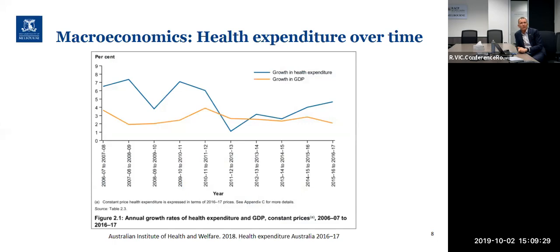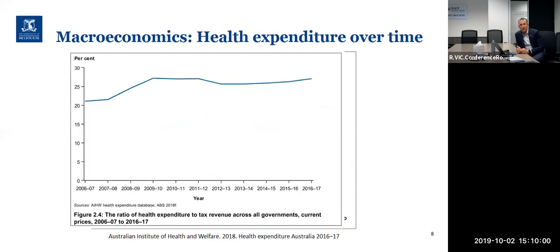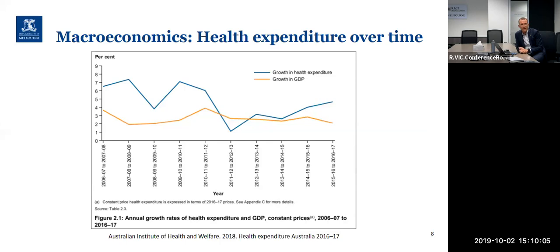Looking at macroeconomics, here's a graph from the Australian Institute of Health and Welfare showing a blue top line — the growth in health expenditure each year as a percentage — and an orange bottom line showing Australia's GDP growth. By and large, the blue line is above the orange line, meaning our annual growth in health expenditure is greater than growth in the entire economy. We're choosing to spend more and more of our economic resources on health expenditure. That's not necessarily a bad thing, but it is a value choice.